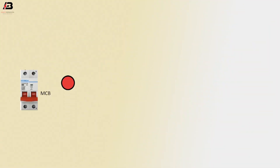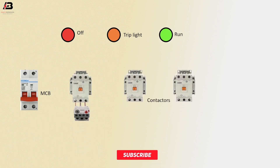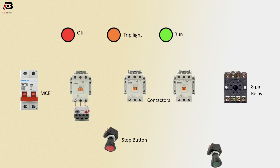Double pole MCB. Indicator light off. Indicator light. Trip light. Indicator light for run. Magnetic contactors. 8-pin delay relay. Stop button. Start button.